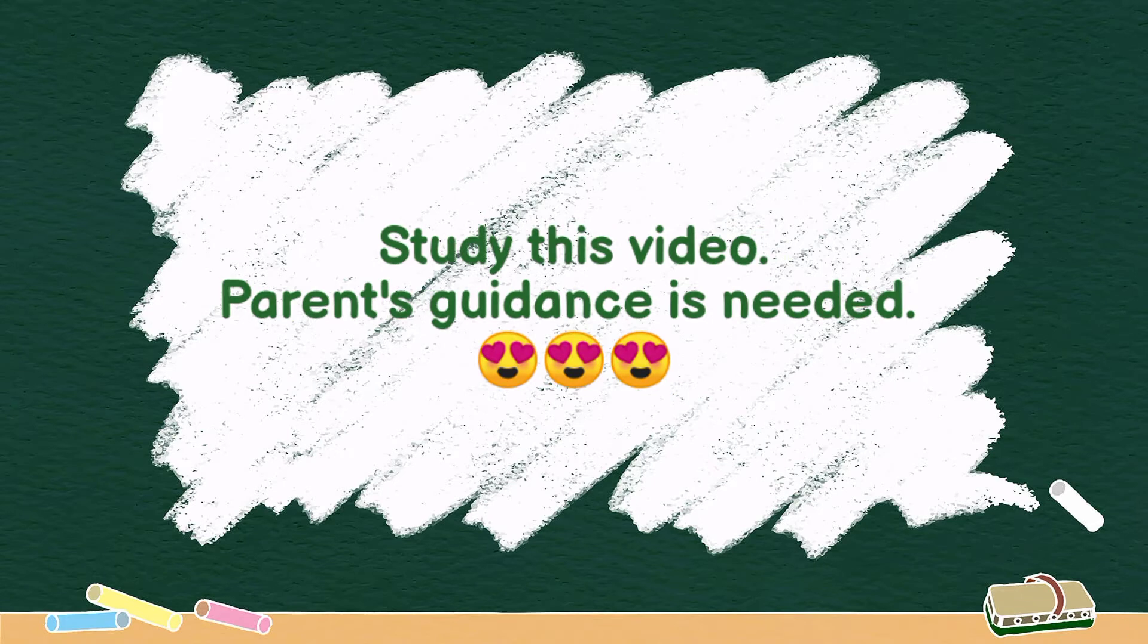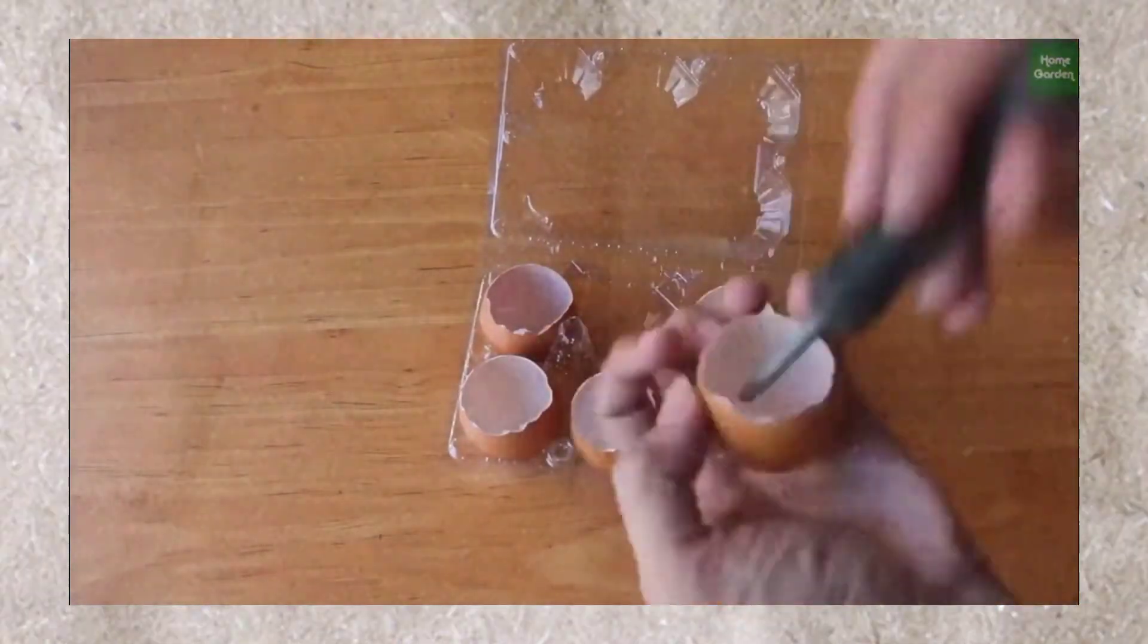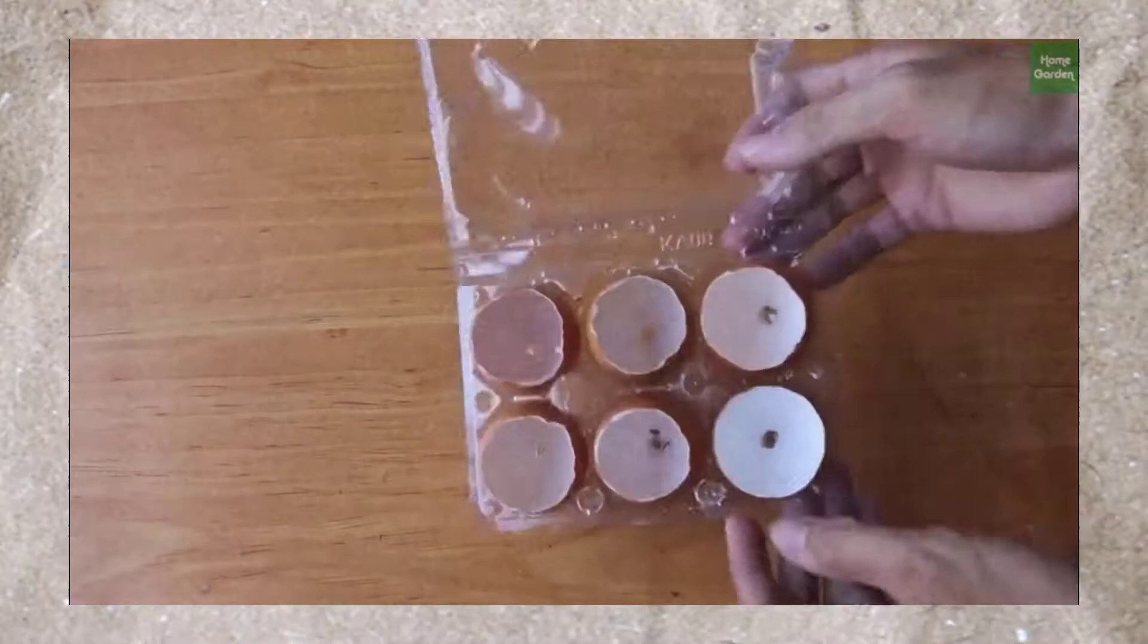First of all, empty the eggs, rinse and dry the shells, then make a hole on the bottom.